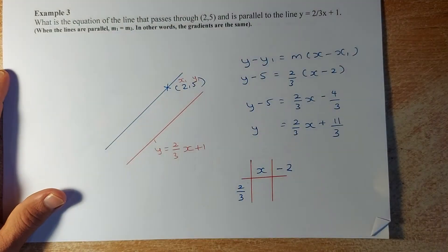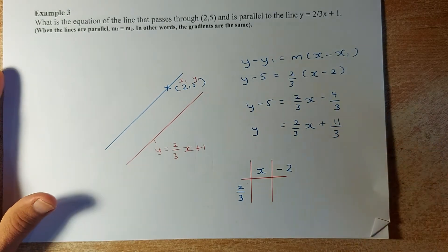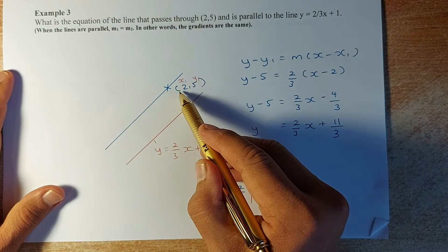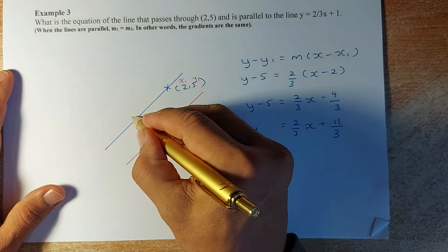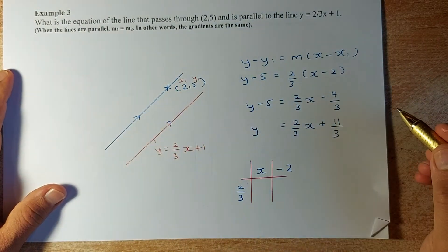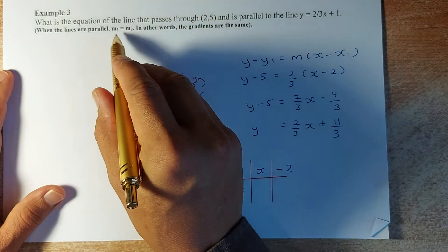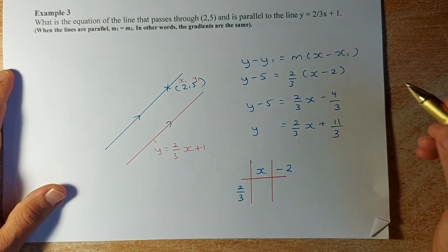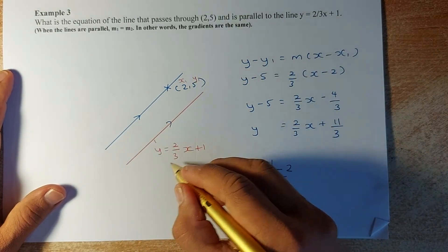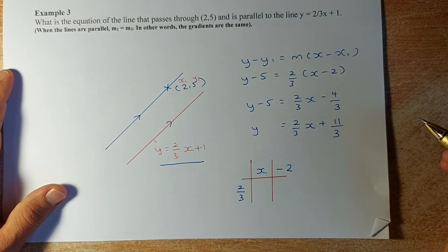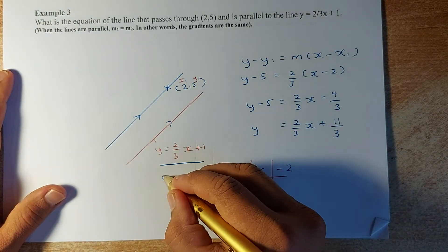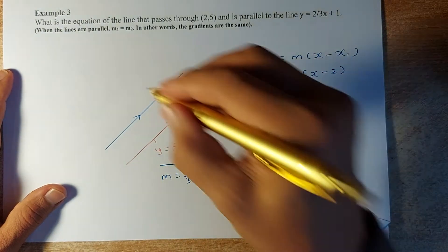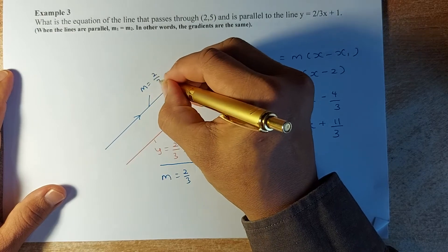This next example is slightly different. What is the equation of the line that passes through (2, 5) and is parallel to another line? When two lines are parallel, m1 equals m2 — the gradients are equal. The red line has equation y = (2/3)x + 1, so its gradient is 2/3. Since the blue line is parallel, its gradient is also 2/3.